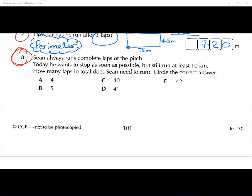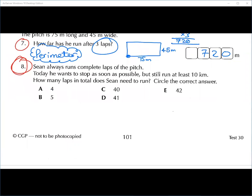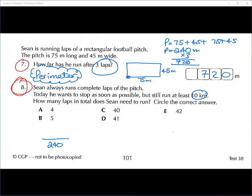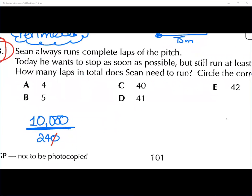Question number eight. Finish eight for me, please. Sean always runs complete laps of the pitch. Today he wants to stop as soon as possible but still run at least 10 kilometres. How many laps in total does Sean need to run? We know that one lap is 240 metres. And in 10 kilometres, how many metres do we have? 10,000. So what are we doing now? We're doing 10,000 divided by the number of metres per lap. Can you help me with the cancelling? First we cancel the zeros. Should we do 24 divided by 2?